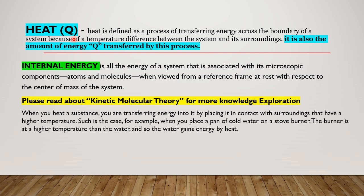We shall talk about heat. Heat is defined as a process of transferring energy across the boundary of a system because of a temperature difference between the system and its surroundings. It is also the amount of energy Q. Q is the symbol for heat transfer by the processes. When we defined heat in part 1 as the coldness or hotness of the body, that was qualitative. We were not in the quantitative state.